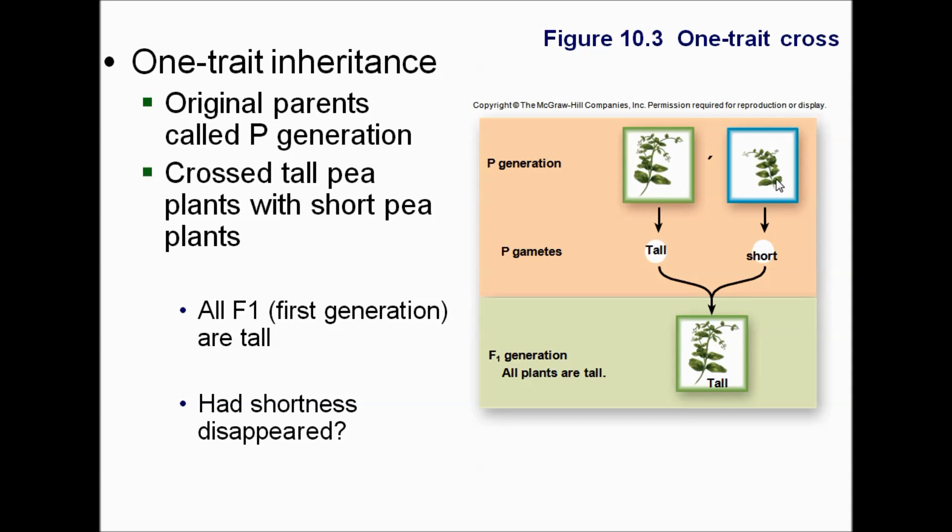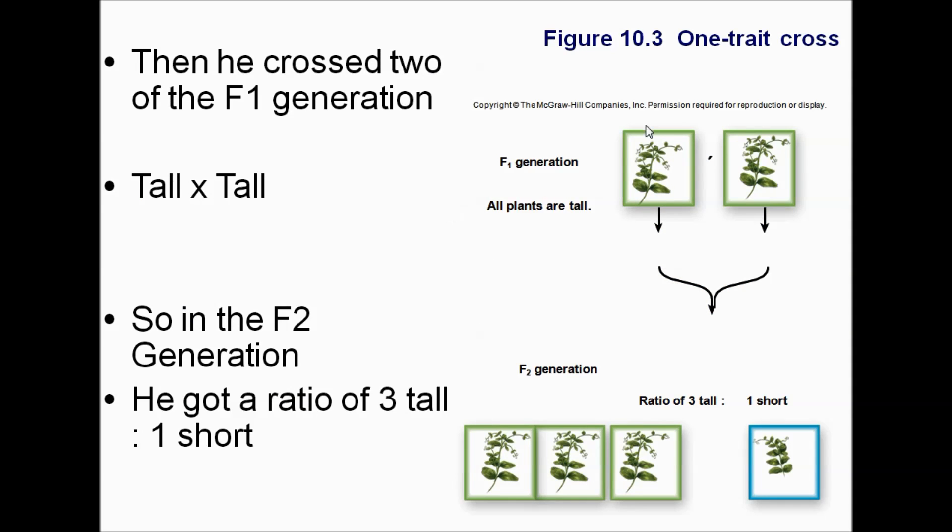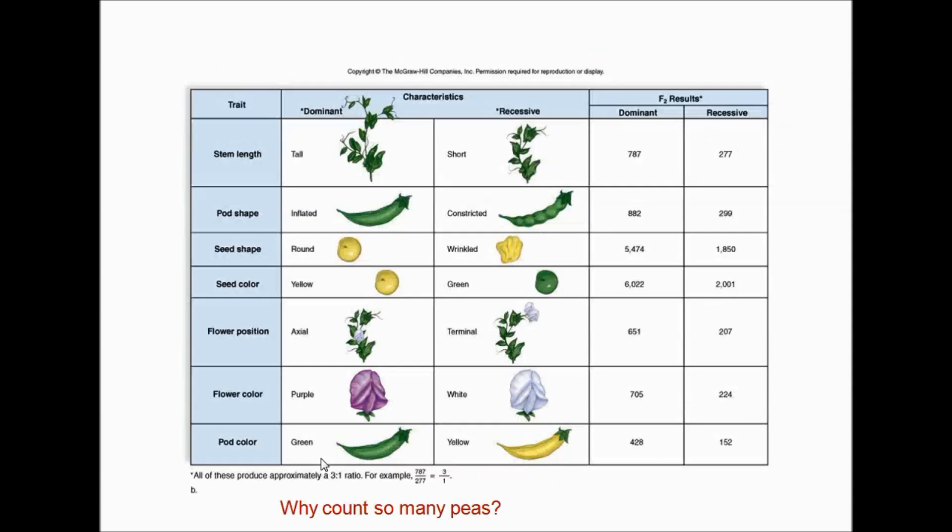For example, tall and short, this is one of the first ones he did. F1 means first generation. So he crossed a tall plant with a short plant. Guess what? He got all tall. He was confused. Why were they all tall? Did the shortness just disappear? Then he took those offspring, the F1 generation, or the first generation of offspring, both tall, and he crossed them. And this time he got a ratio of three tall to one short. This guy's a numbers guy, remember?